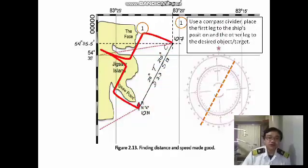First we need to use the compass divider, then place the first leg to the ship's position and the other leg to the desired object or target.